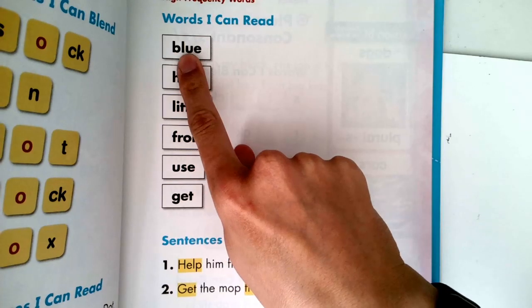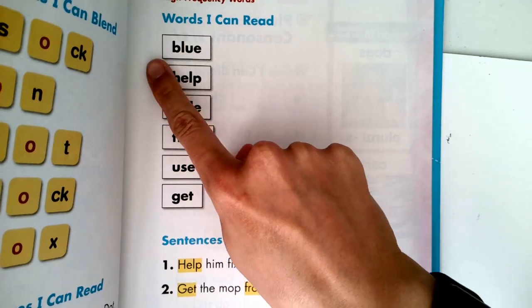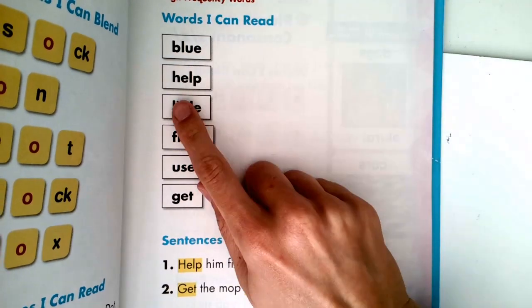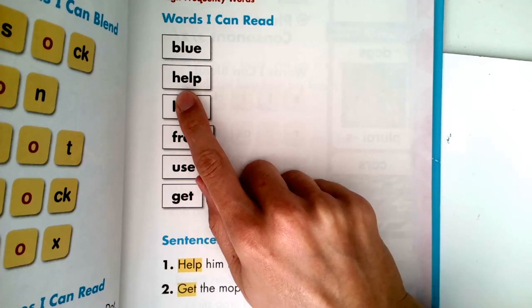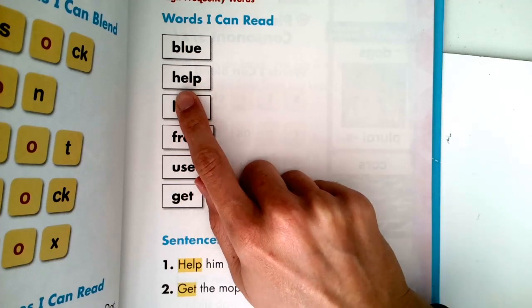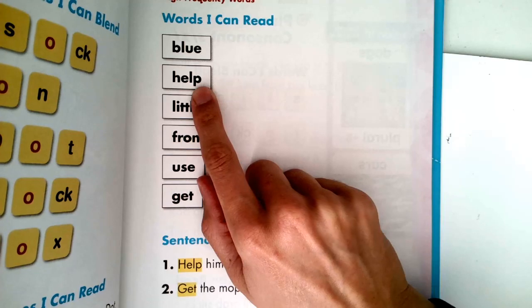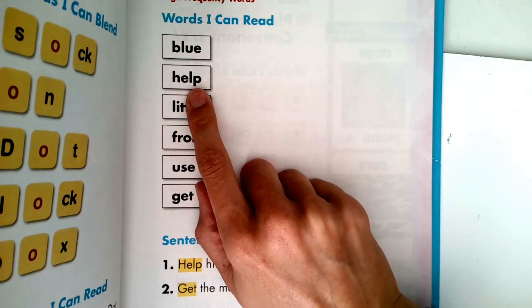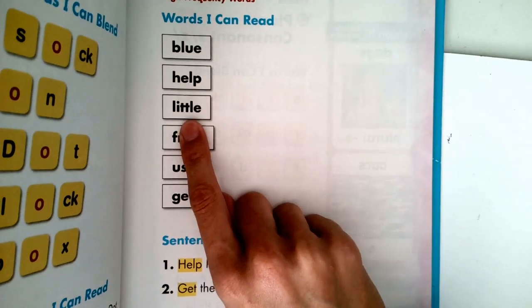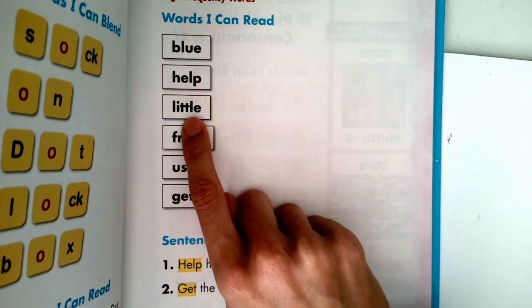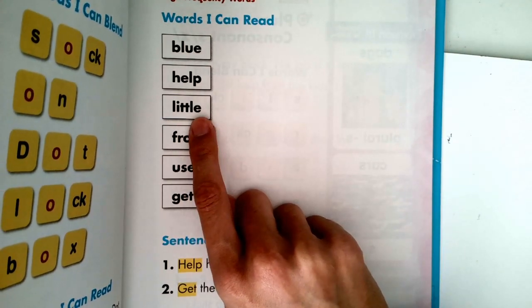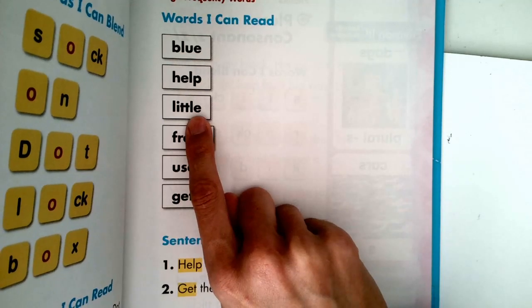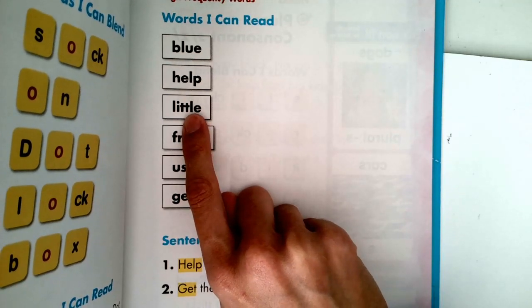First word is blue. Can you point to the word and say it? Blue. Nice job. The second word is help. Can you point to the word and say it? Help. Help. Good. Like, I help my friends with their work. The next word, do you know this one? Little. Will you point to the word and say it with me? Little. I have three little sisters.